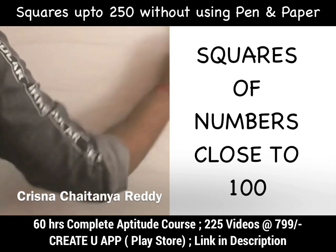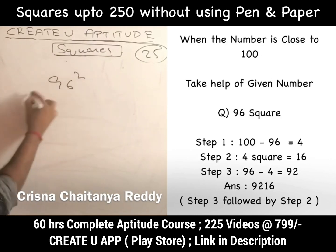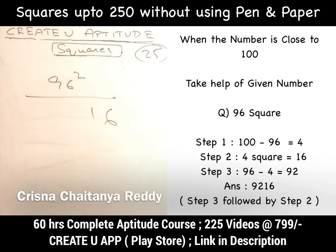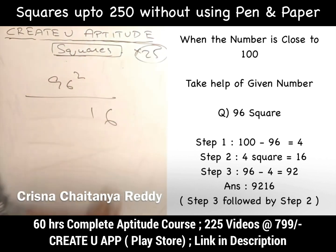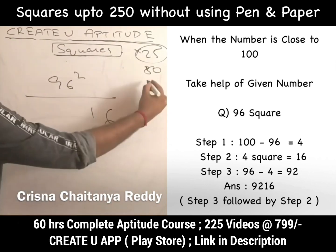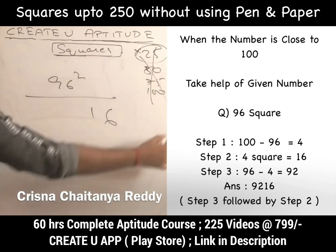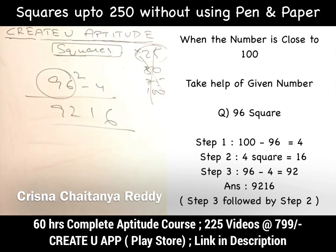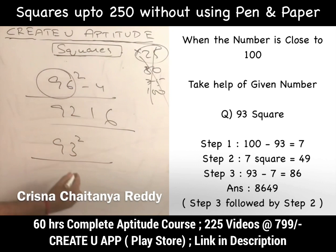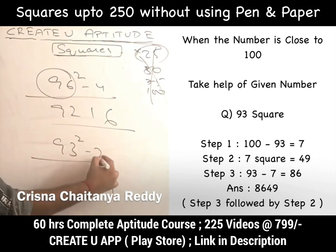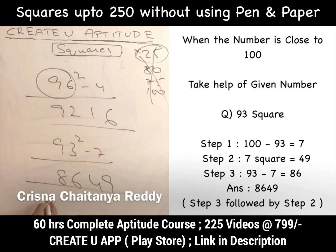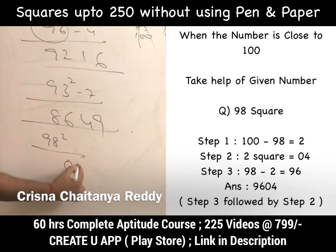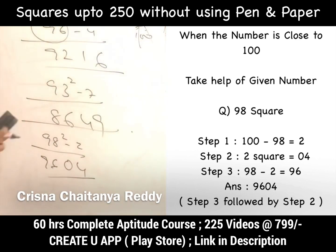For numbers close to 100: take 96². It is 4 less than 100. 4² = 16; write 16. For close-to-100 numbers, subtract the difference from the given number itself (not from 25 or 50): 96 − 4 = 92. Answer is 9216. For 93²: 7 less than 100. 7² = 49. 93 − 7 = 86. Answer is 8649. For 98²: 2 less than 100. 2² = 04. 98 − 2 = 96. Answer is 9604.